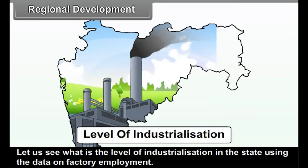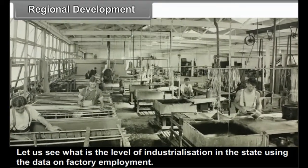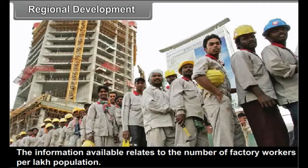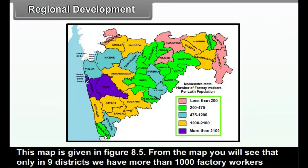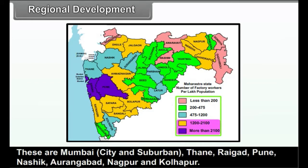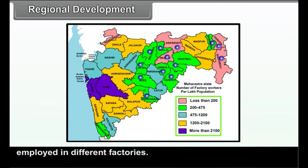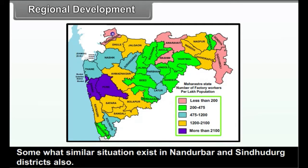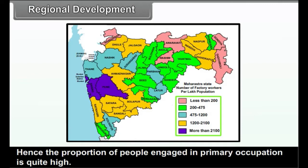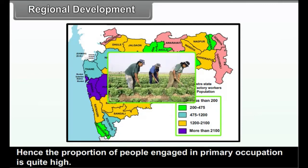Let us see the level of industrialization in the state using data on factory employment — specifically, the number of factory workers per lakh population. This map is given in figure 8.5. From the map, only 9 districts have more than 1,000 factory workers per lakh population: Mumbai City and Suburban, Thane, Raigarh, Pune, Nasik, Aurangabad, Nagpur and Kolhapur. Certain districts in central and eastern Maharashtra have even less than 500 persons per one lakh people employed in factories. A somewhat similar situation exists in Nandurbar and Sindhudurg districts. Hence, the proportion of people engaged in primary occupations is quite high.